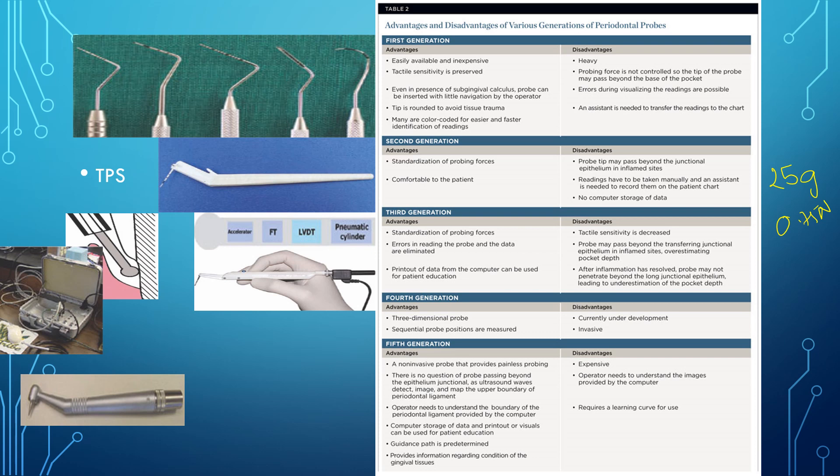The normal probes that we use in our day-to-day life, which we generally study, are first generation probes which are easily available and inexpensive. The best thing is the tactile sensitivity is preserved because we directly use them. Even in the presence of subgingival calculus, this can be inserted with a little navigation by the operator. Here the tip is rounded to avoid tissue trauma, and most of these cases in the first generation probes they are color coded or there are specific codings which are given.